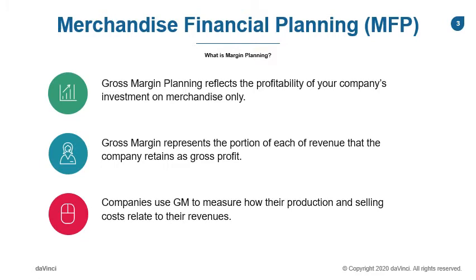Gross Margins, or GM for short, is a measure providing companies the visibility on how their production and selling costs relate to the revenue. This represents the portion of the revenue that the company will retain as a profit.